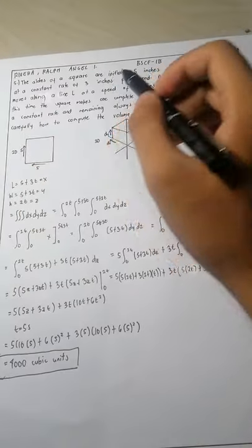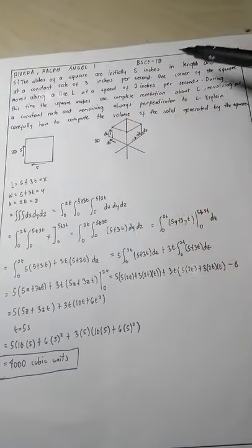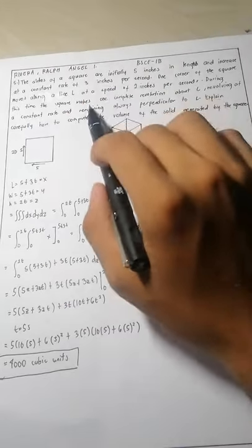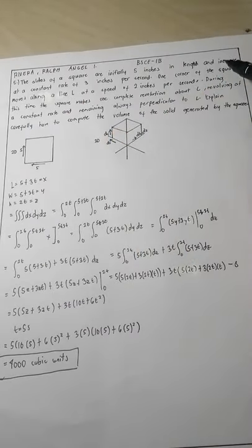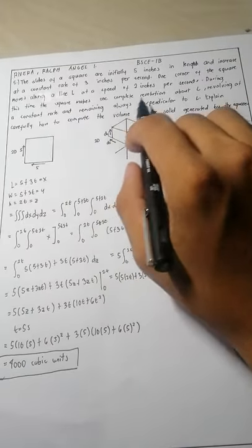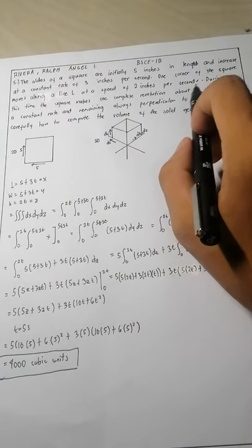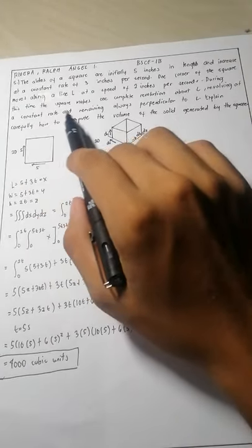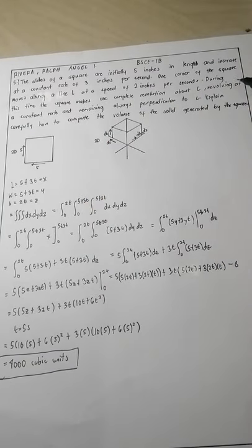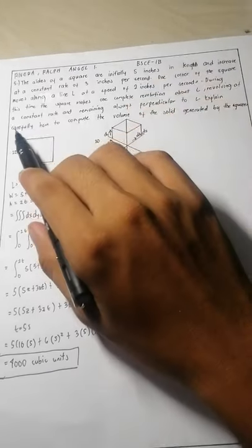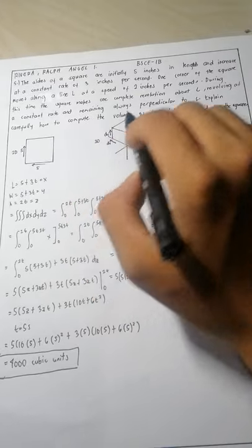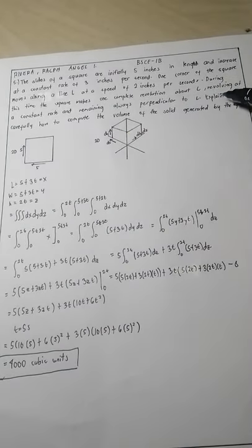Number 5: the sides of a square are initially 5 inches in length and increase at a constant rate of 3 inches per second. One corner of the square moves along a line L at a speed of 2 inches per second. During this time, the square makes one complete revolution about L, revolving at a constant rate and remaining always perpendicular to L.